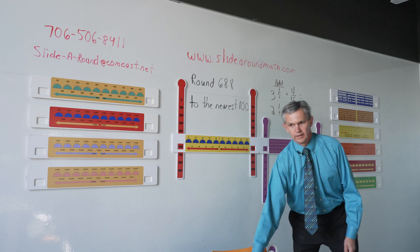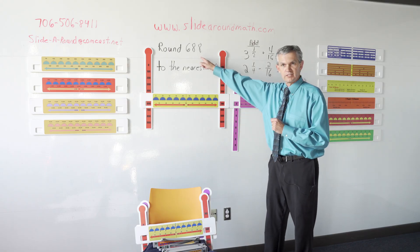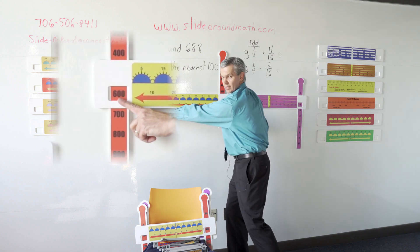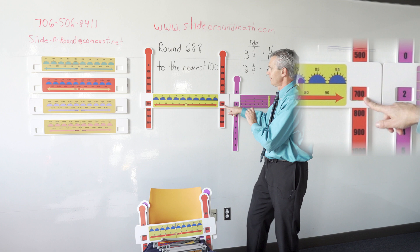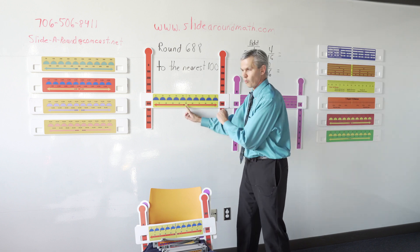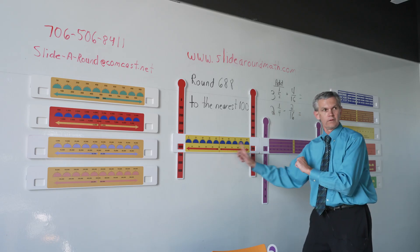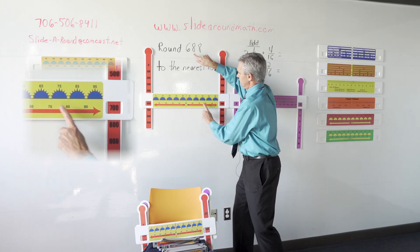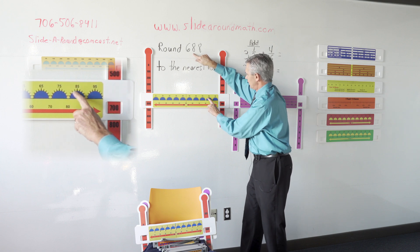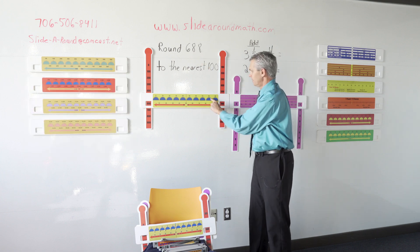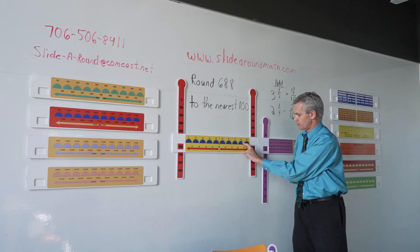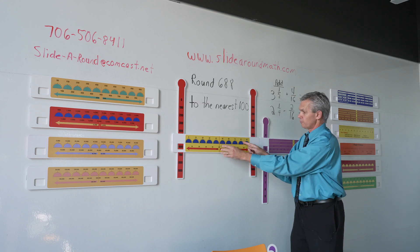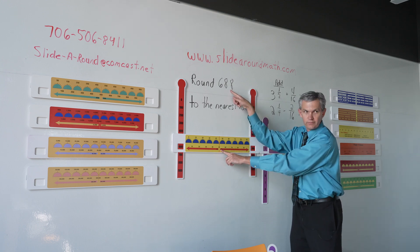The first one we're going to talk about today is called my 100x, and we're going to round 688 to the nearest hundred. You'll notice we have 600 on this side, 700 on this side. There's a line in the middle — 49 or less you go this way, 50 or more you go this way. The most obvious way is my finger is closer to 700 than 600, and 88 is greater than 50.